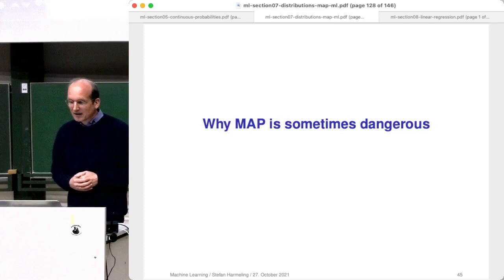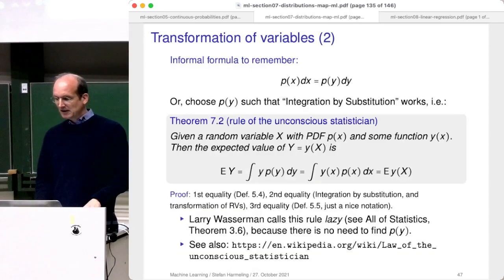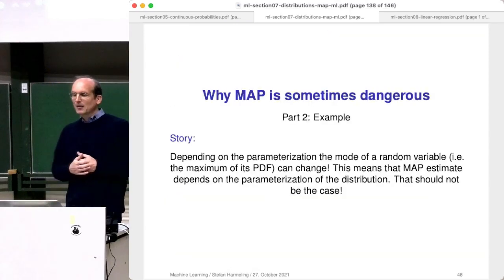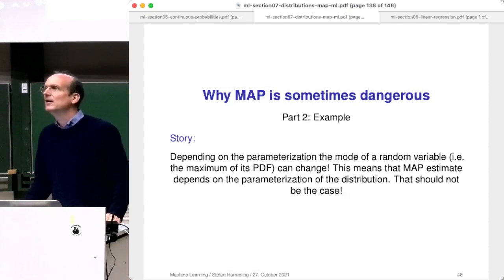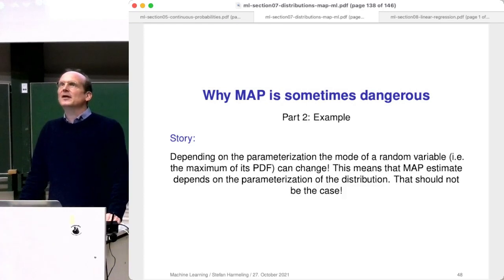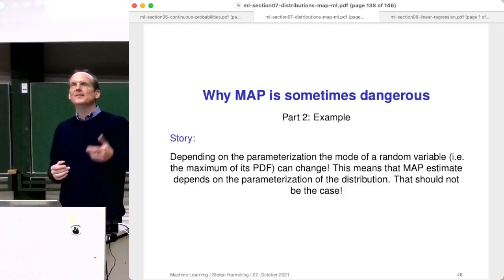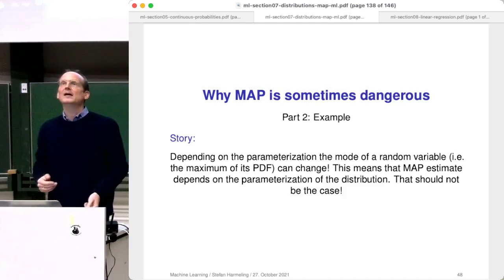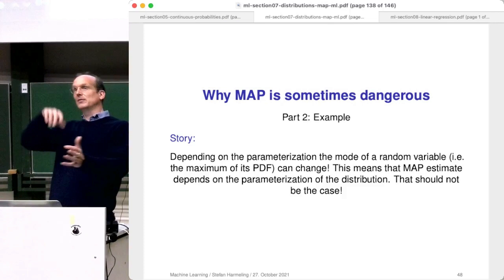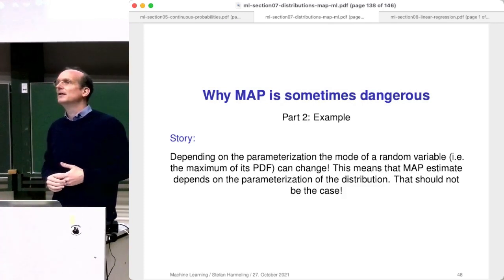Then there was a chapter on why MAP estimation is sometimes dangerous. Depending on the parameterization of your random variable, you might get different outcomes. When you parameterize the mean directly, you get a certain MAP estimate. It would be nice if a reparameterization — say to the power of 2 or 3 — would give an estimate that's just the old estimate to the power of 2 or 3. That's not the case unfortunately. MAP is not invariant with respect to the representation.